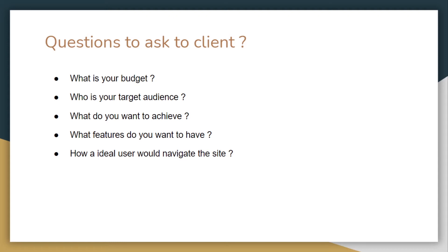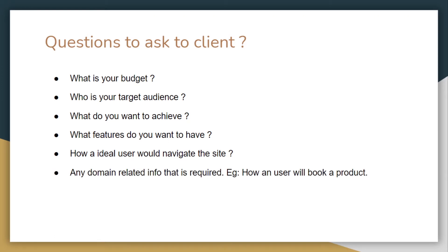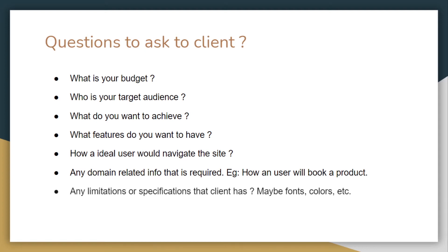Next we will ask about the features they want on the website, which will be used by both designers and developers. Then we will ask about navigation — how they want a user to interact with the website so we can make it easy to navigate. After this, we will ask for any domain-related information. For an e-commerce site, we will ask about the product journey or how the user will book a product. Finally, we will ask about any limitations or specifications such as fonts, colors, or screen size.